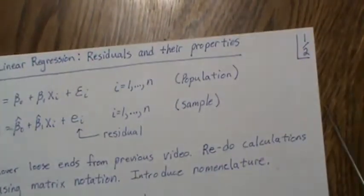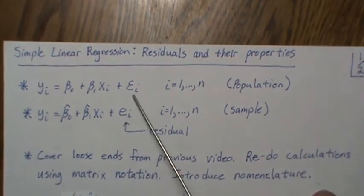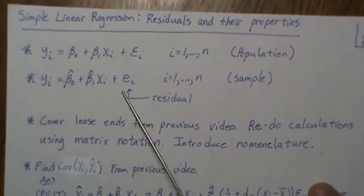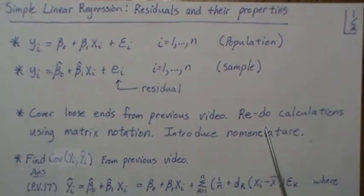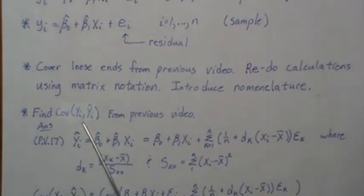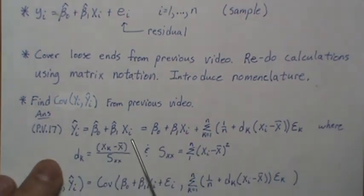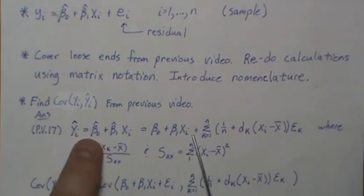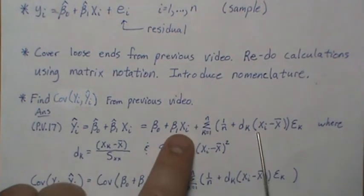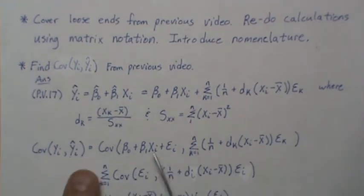Now a loose end from a previous video: I want to redo the calculation of the covariance between Yᵢ and Ŷᵢ. From PV17, we can write the fitted line using the cᵢⱼ coefficients — we already covered that.